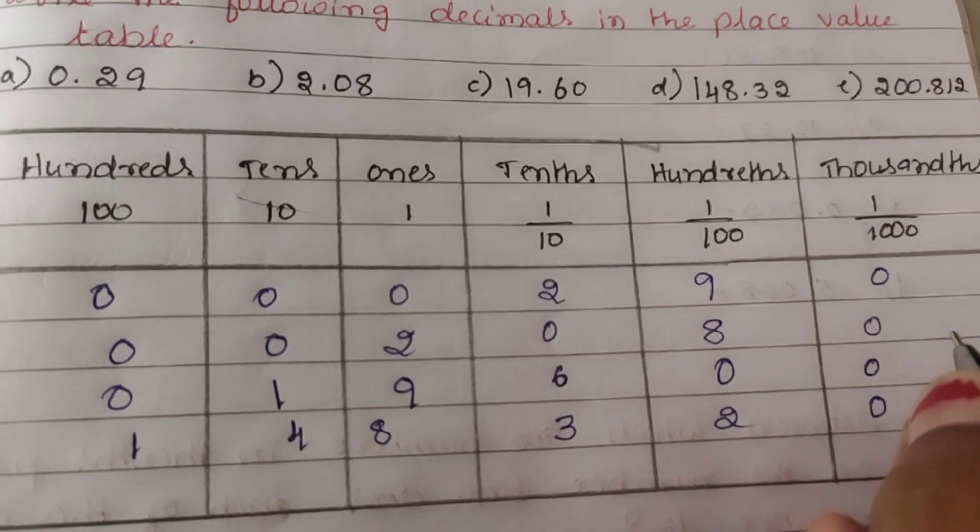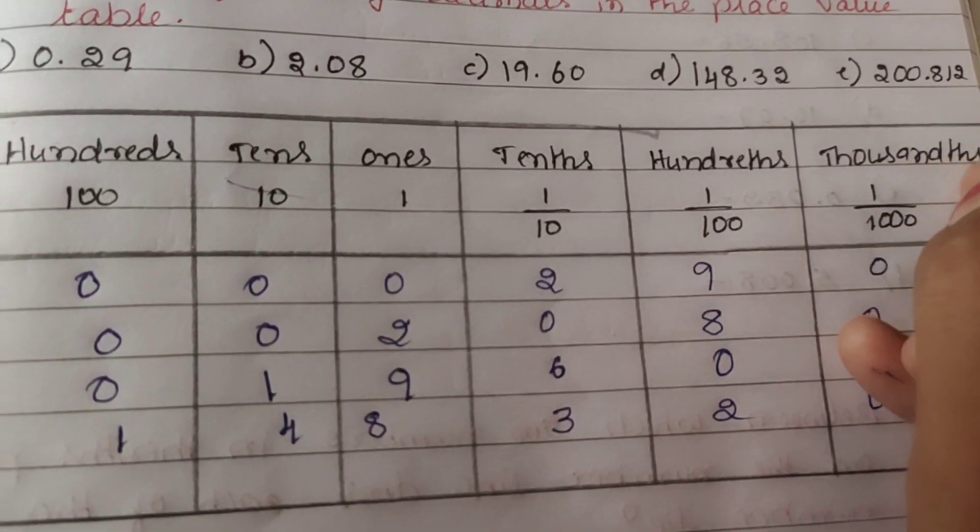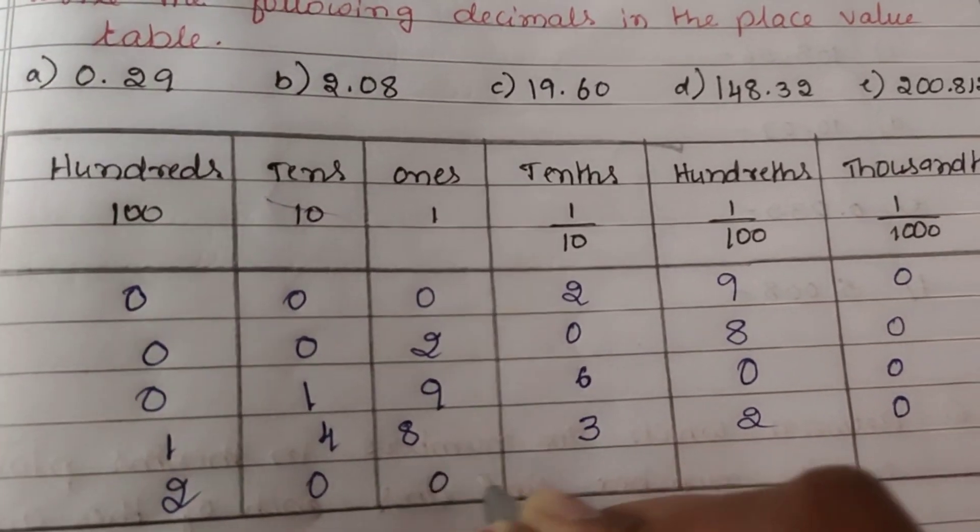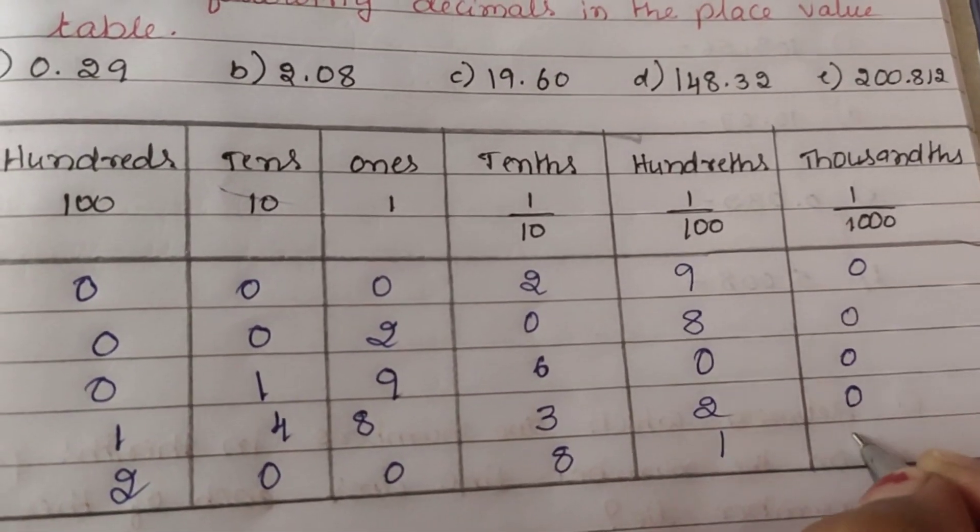Hundredths are 0, thousandths are 0. Next, 200.812: so 200 is 2, 0, 0, then 8, 1, 2.